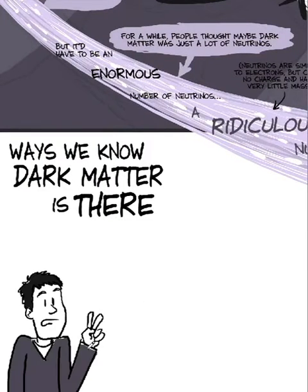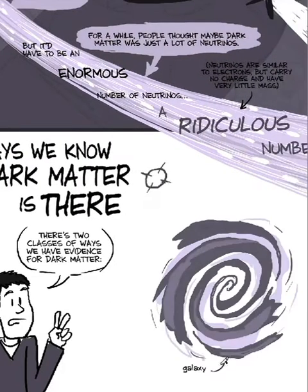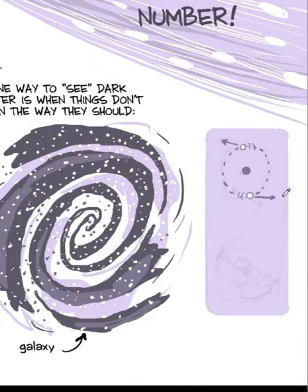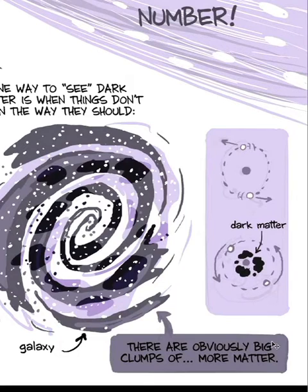There's two classes of ways that we have evidence for it. One way you see dark matter is things don't spin the way they should if there's only normal matter. There's obviously big clumps of normal matter. There's another one that's really cool too. It's called strong lensing.